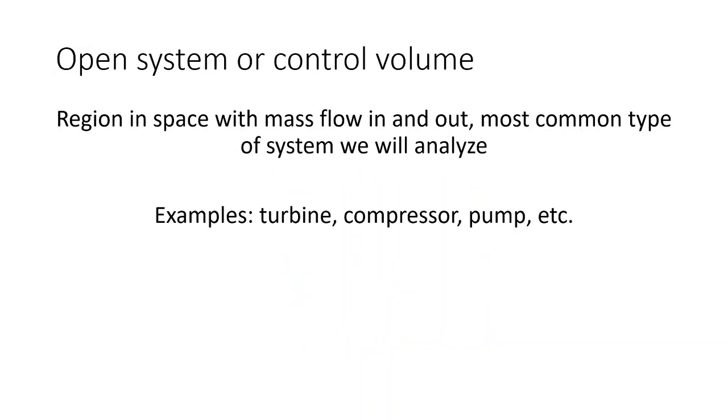Now, the final type of system that we're going to deal with and kind of the most important is an open system, also known as a control volume. It's defined as a region in space with mass flow in and out. Some examples of that are a turbine, a compressor, a pump.